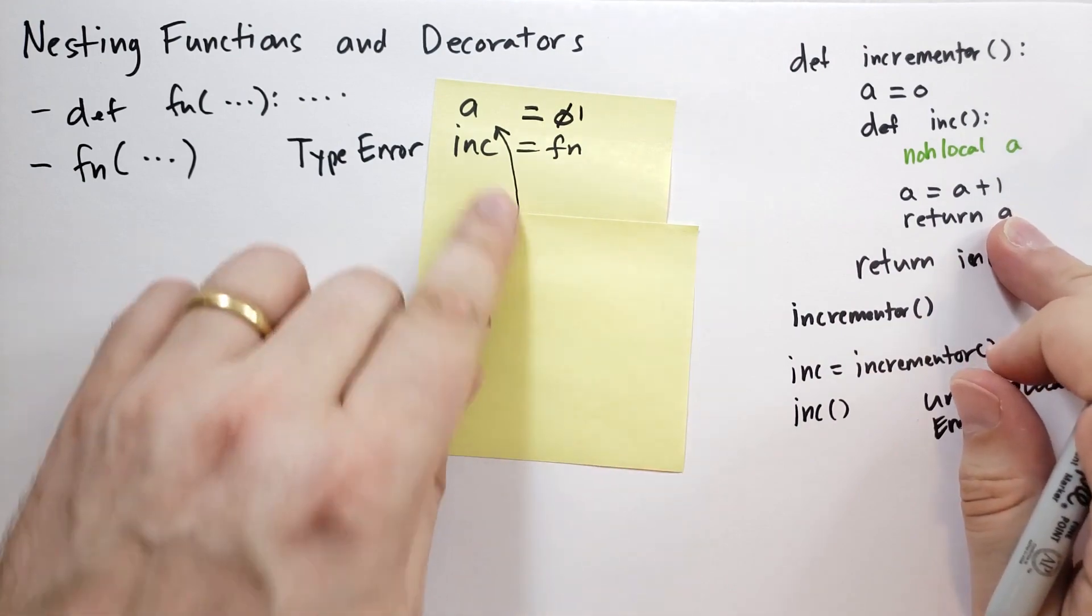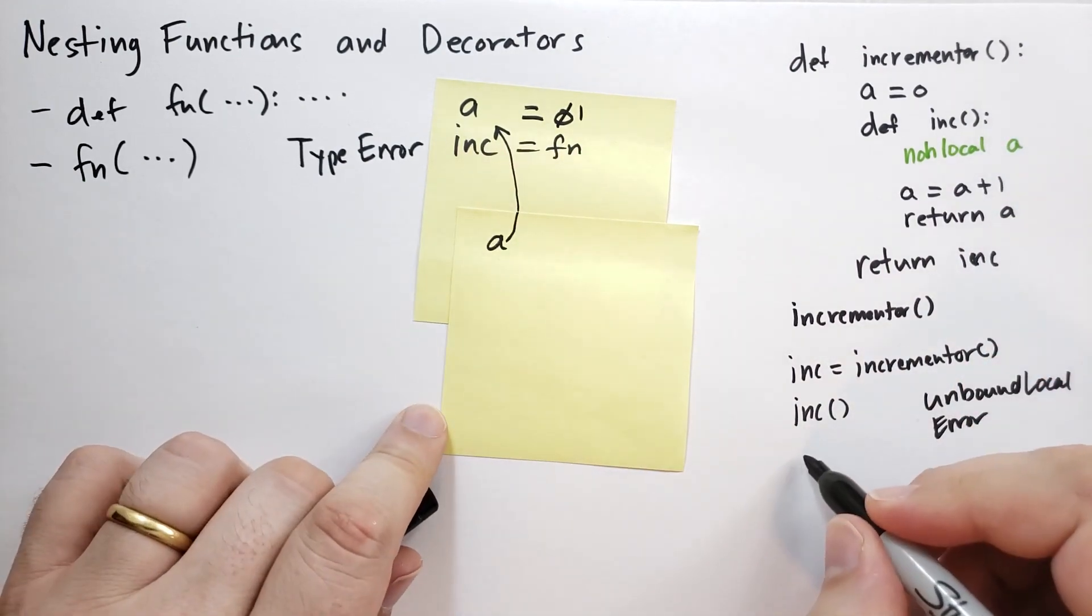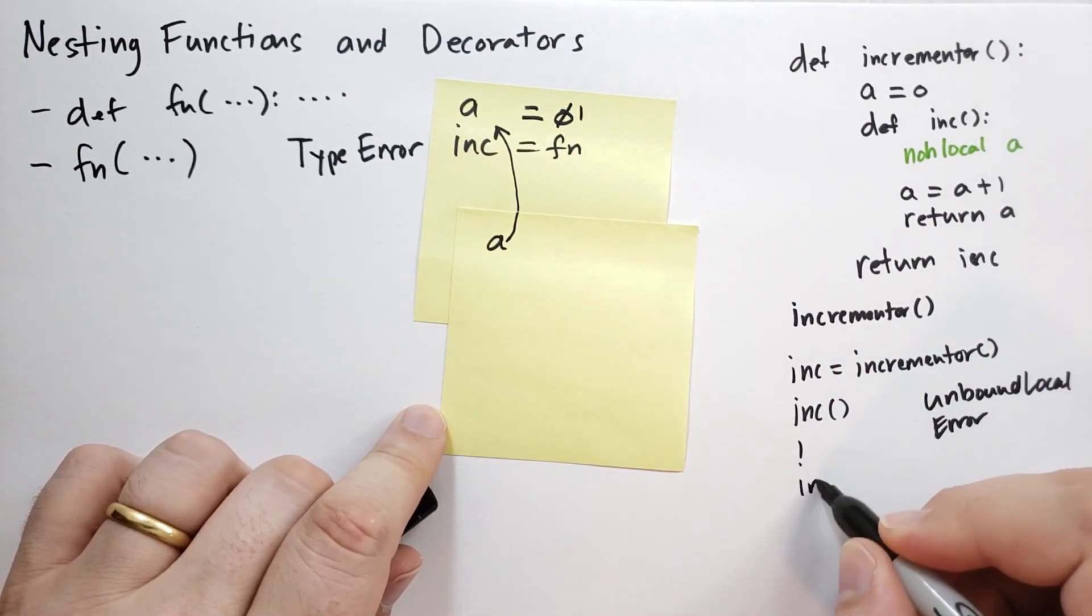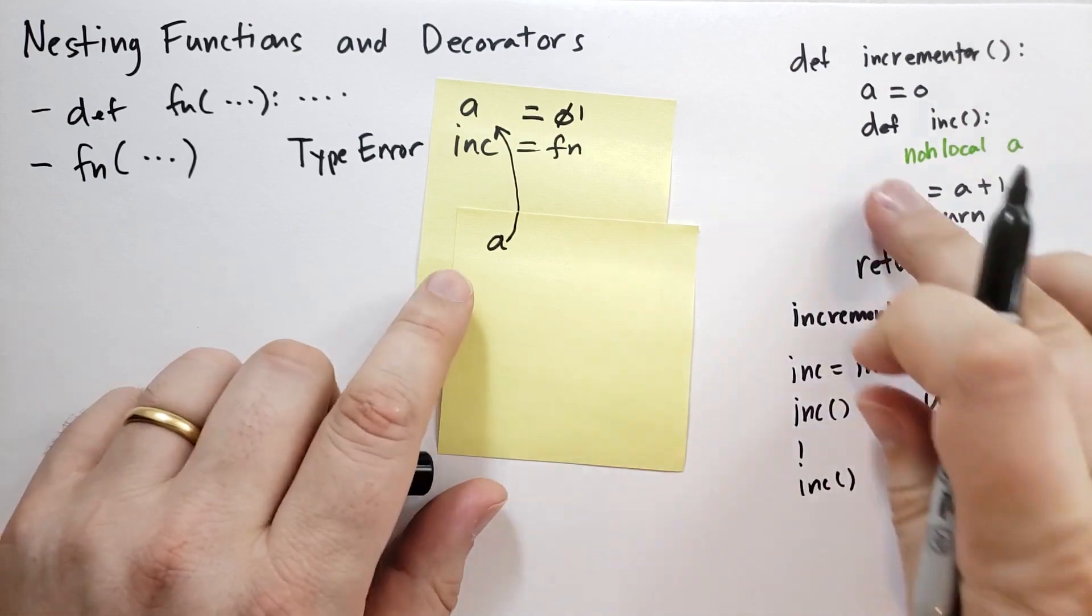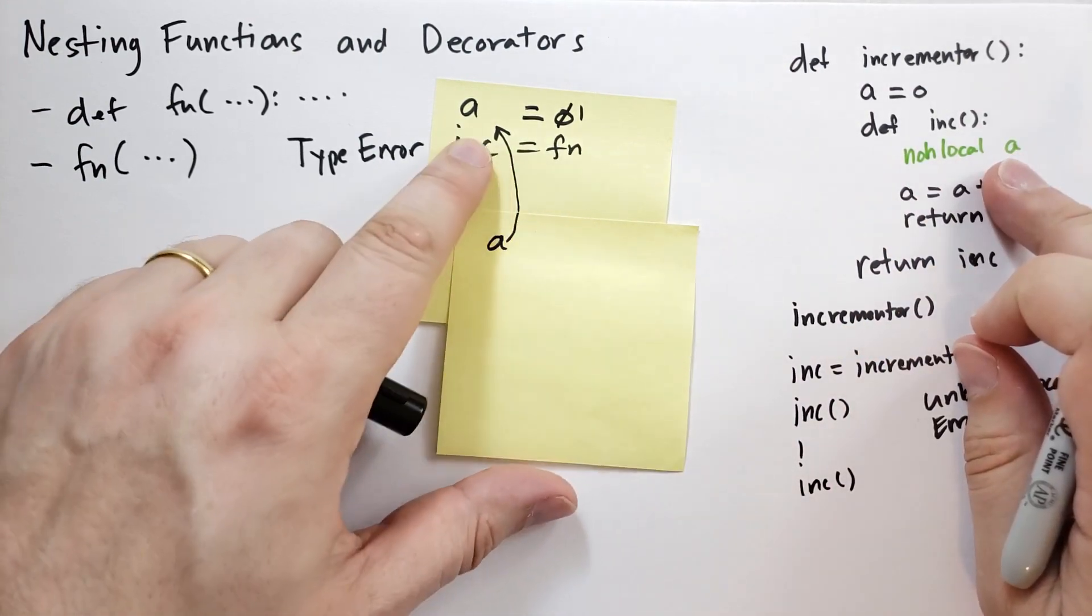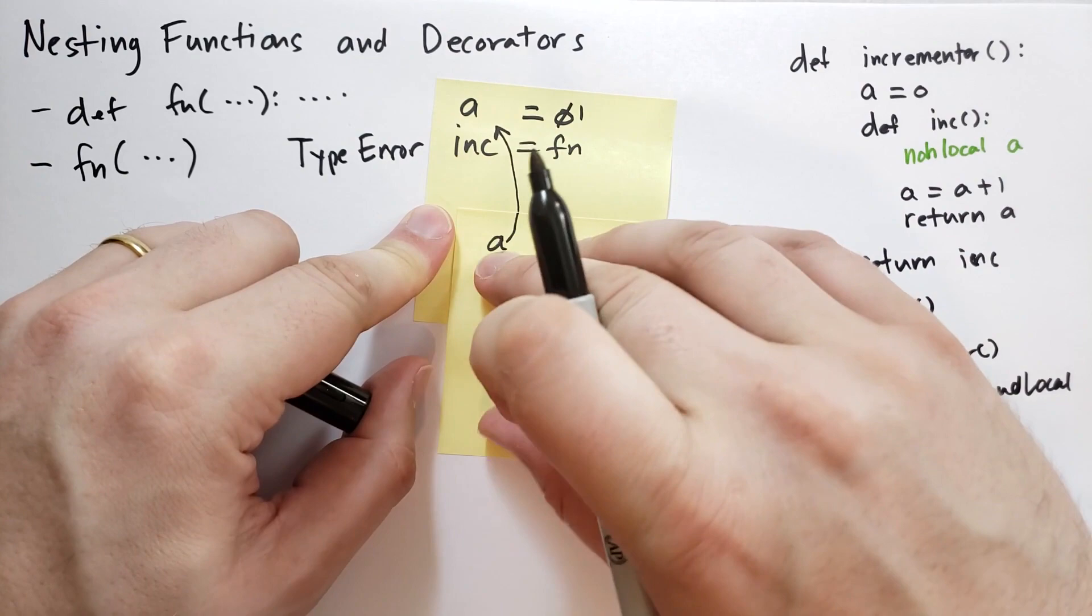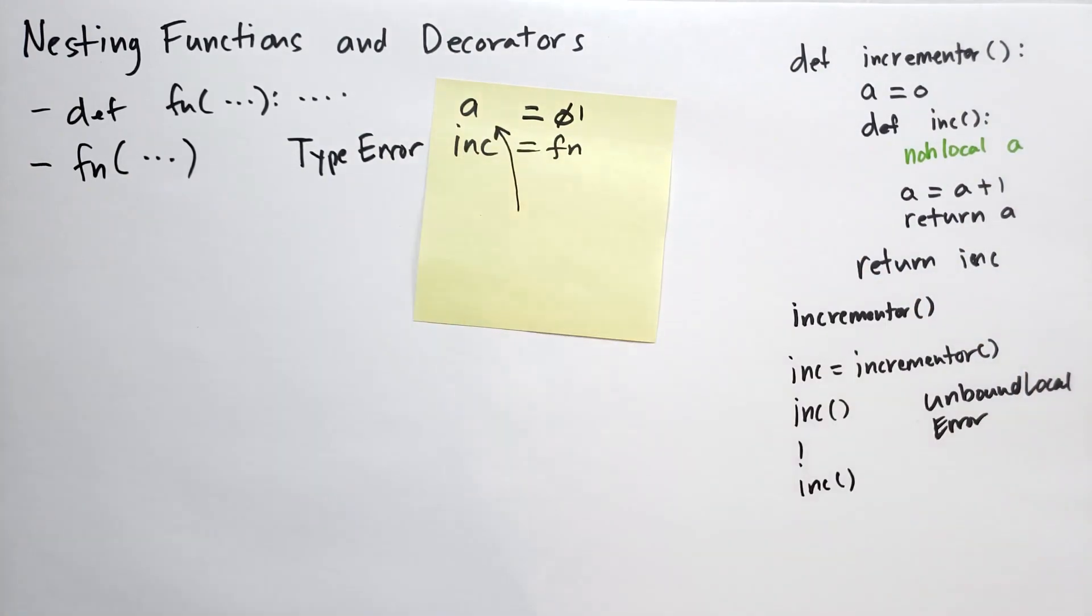And then it returns the value of a, which is one. Again, so this is going to return one, and then if we call it again, what's it going to do? Well, it starts off, it says non-local a, so we actually get rid of this namespace because we no longer have the function called.